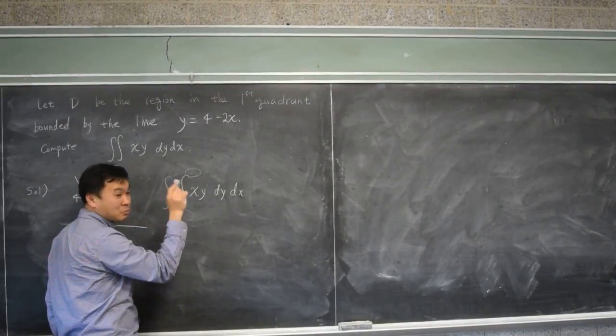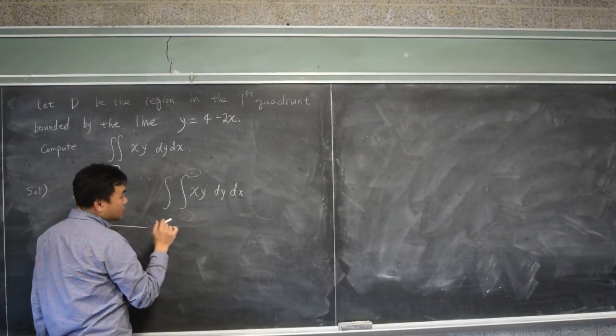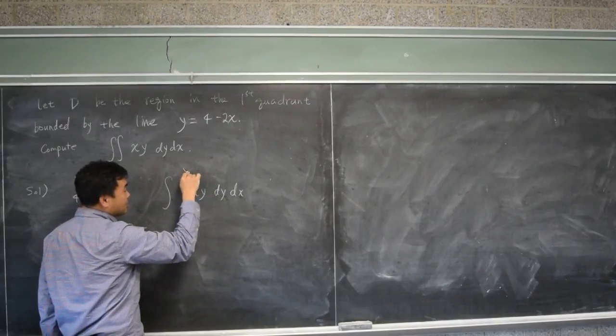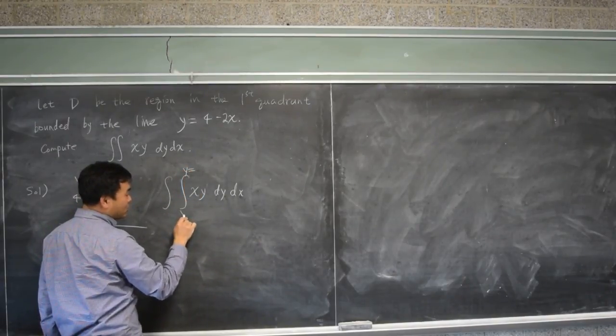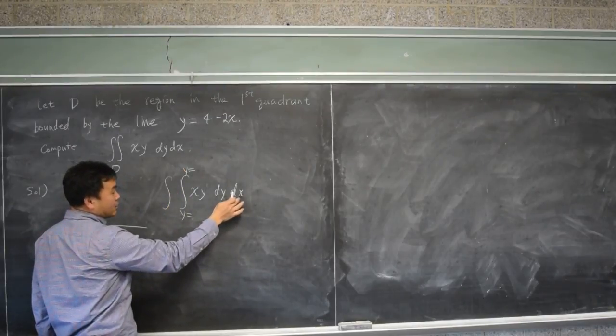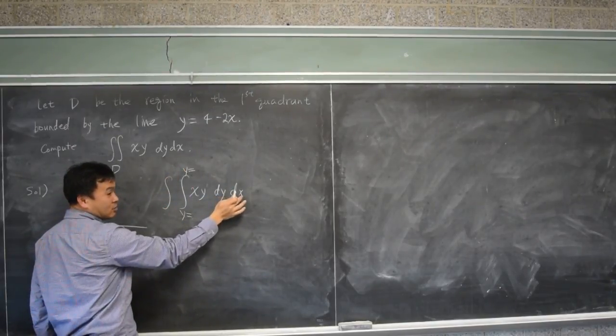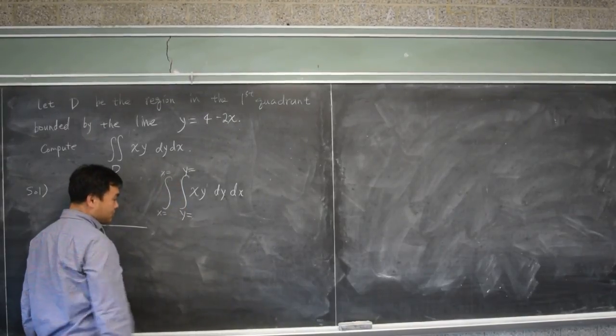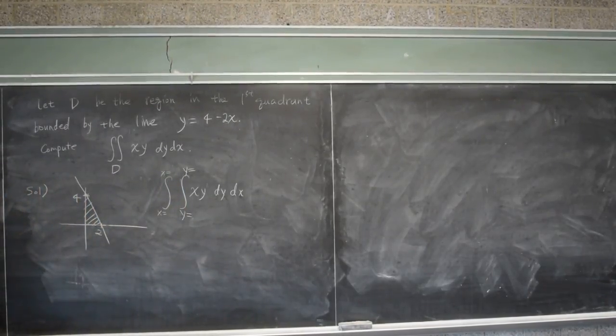And what's in here should be plugged into x or y. Which one? It should be plugged into y, right? So when you have dy, anything that's here really is like y equals and y equals. And anything in here, because you have dx here, anything that you put here should be x equal and x equals.